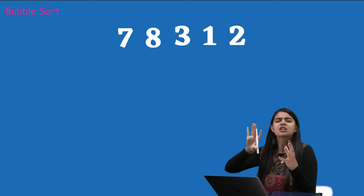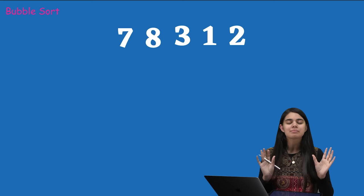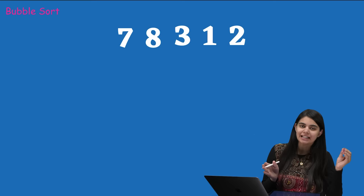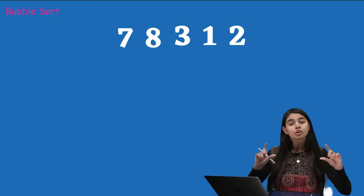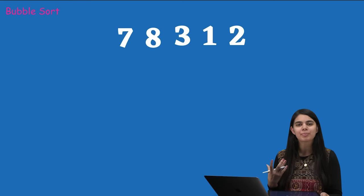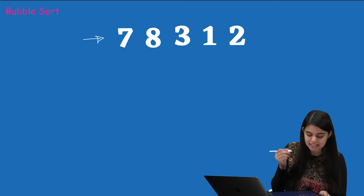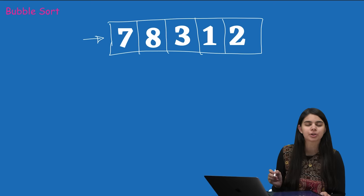We push elements to the back of the array and get them in ascending order. In this class we will sort in ascending order. If we reverse those conditions, the array will be sorted in descending order. Let's take an example: we have given an array with elements 7, 8, 3, 1, 2.